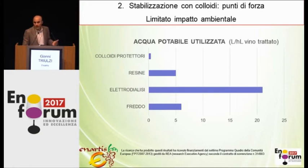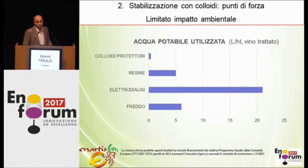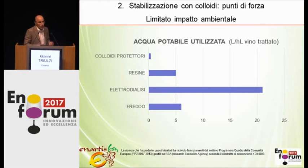I put together all the protective colloids into one chapter because the quantity is very much the same irrespective of the type of colloid used. The quantity of water used for colloids is very, very limited. If we extend this to a European level, if all wine stabilized with the cold approach were stabilized with colloids, we would save huge amounts of water — so much that it equals the consumption of a town of 10,000 people in one year.